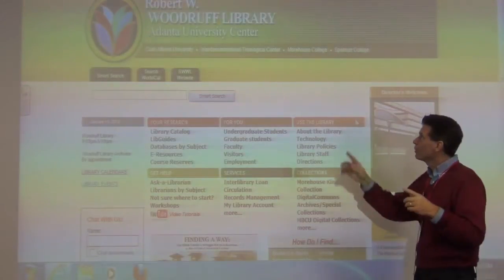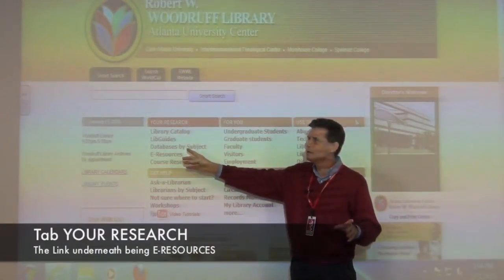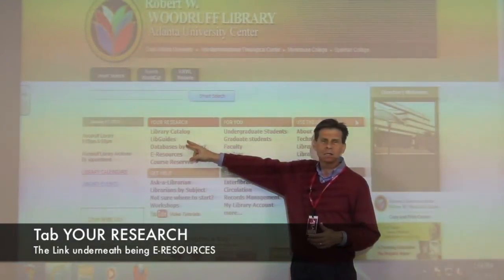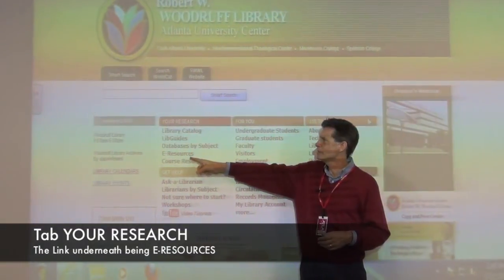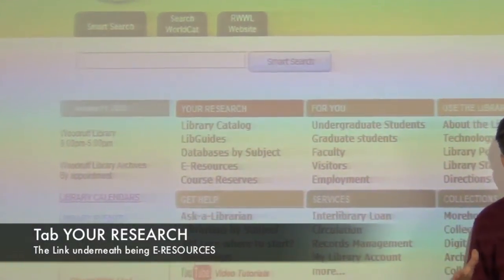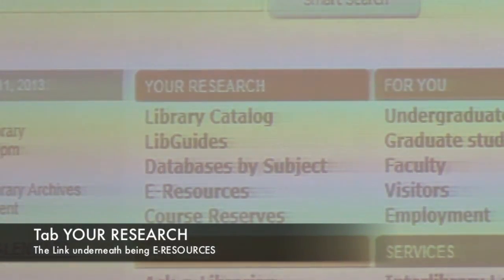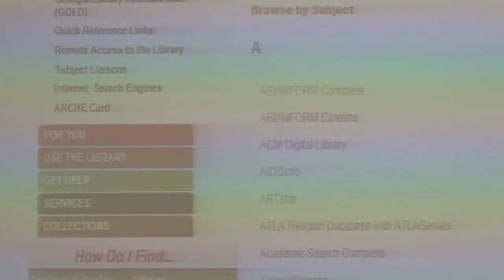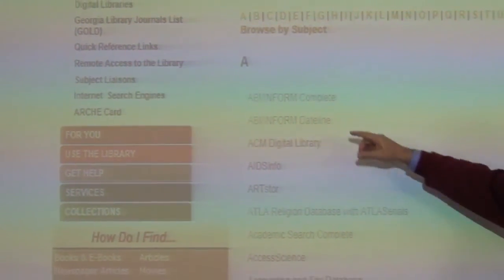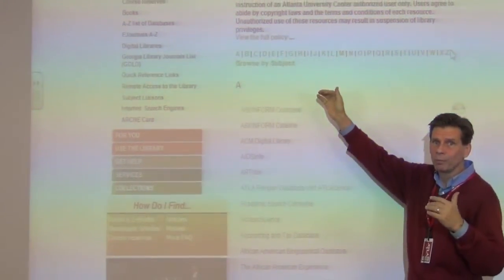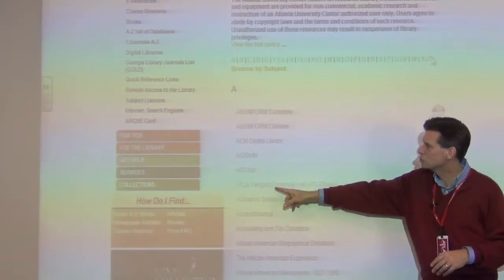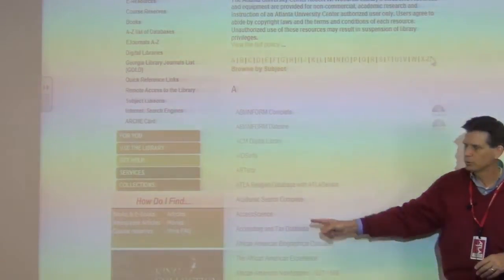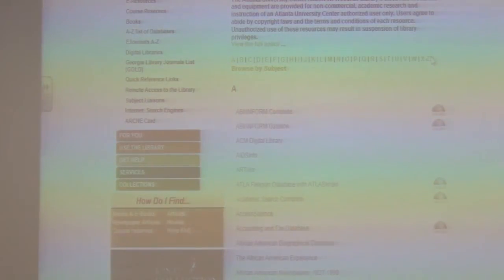From the library homepage, almost everything you need is under the Your Research tab. The fourth item down is E-Resources, pointing to our electronic databases. If I click on that, it presents an alphabetic listing of all those over 200 databases. Since we're doing ATLA Religion Database, we'll click on it.